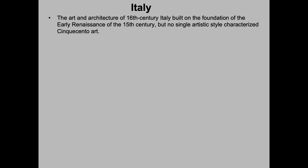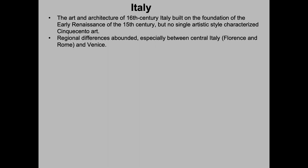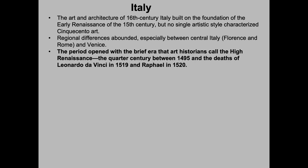The art and architecture of 16th century Italy built on the foundation of the early Renaissance of the 15th century. But no single artistic style characterized what we call Cinquecento art. Regional differences abounded, especially between central Italy — Florence and Rome — and Venice. The period opened with a brief era that art historians call the High Renaissance, a short period of time, a quarter century, about 25 years, between 1495 and about 1520.